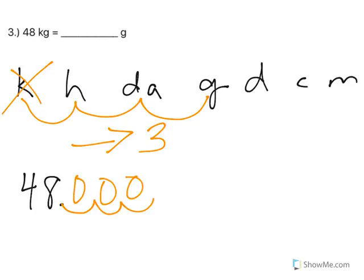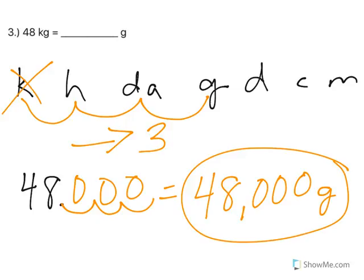And in those empty humps, go zeros. So I end up with 48,000 grams. And that should make sense, right? Kilograms are bigger. So if I'm breaking up these big chunks into a lot of smaller chunks, I'm going to have a lot more of them because I'm breaking them down smaller.